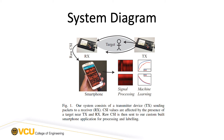As shown in the graph, a transmitter TX sends packets to a receiver RX. The signal is affected by the presence of a target in the target area between the TX and RX. The raw CSI is then directly sent to a smartphone for recording, signal processing, and potentially even machine learning.